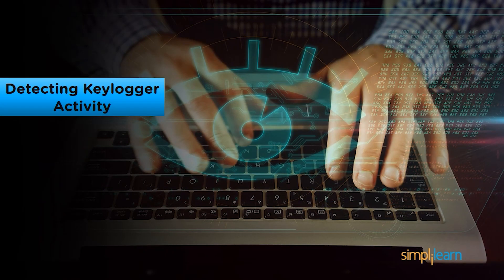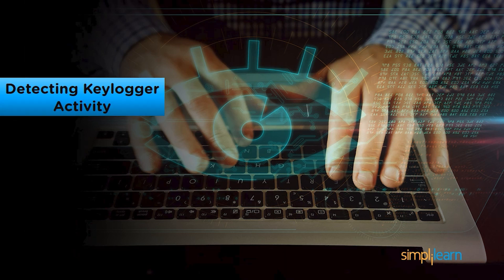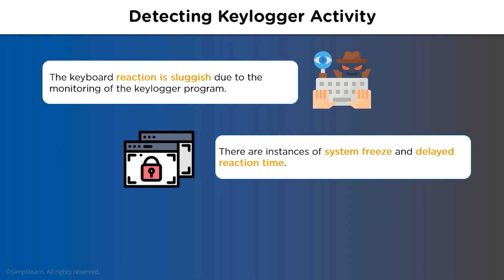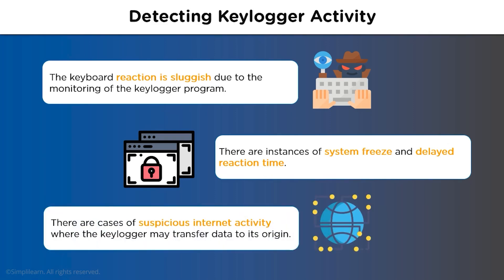Now let's look at how to identify whether a system is infected by the key logging issue. The key logging issue can be identified if the keyboard lags behind — data entered sometimes gets stuck when typing. There are also cases of unexpected system freezes, delayed reaction times for different applications running on the system, and suspicious internet activity that you are unaware of, which could all indicate a keylogging problem.